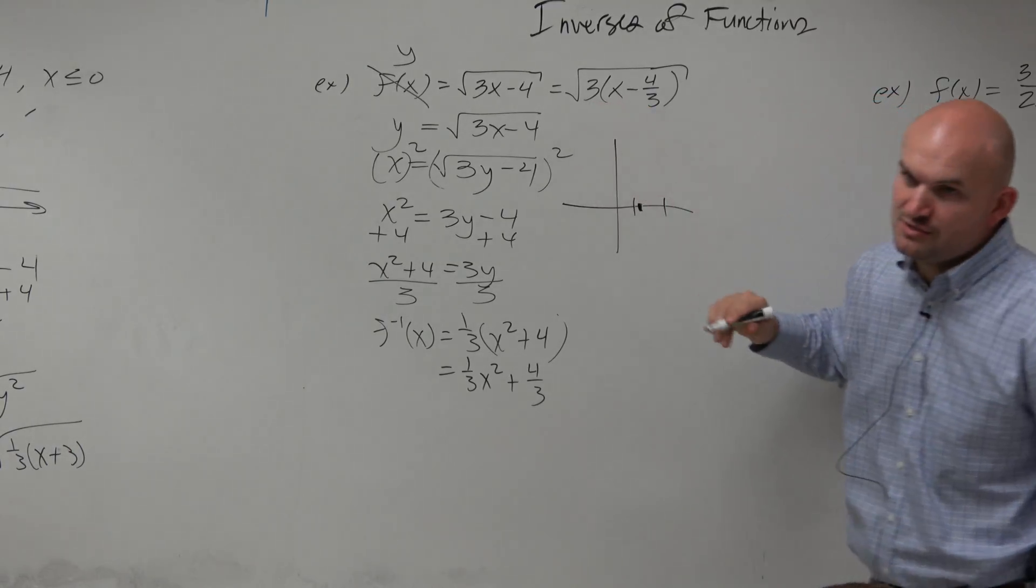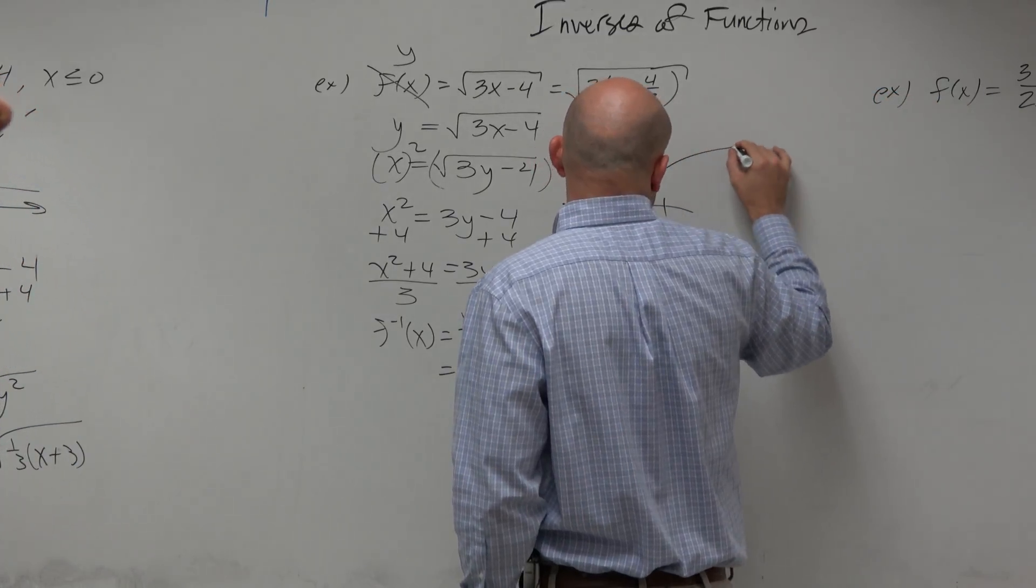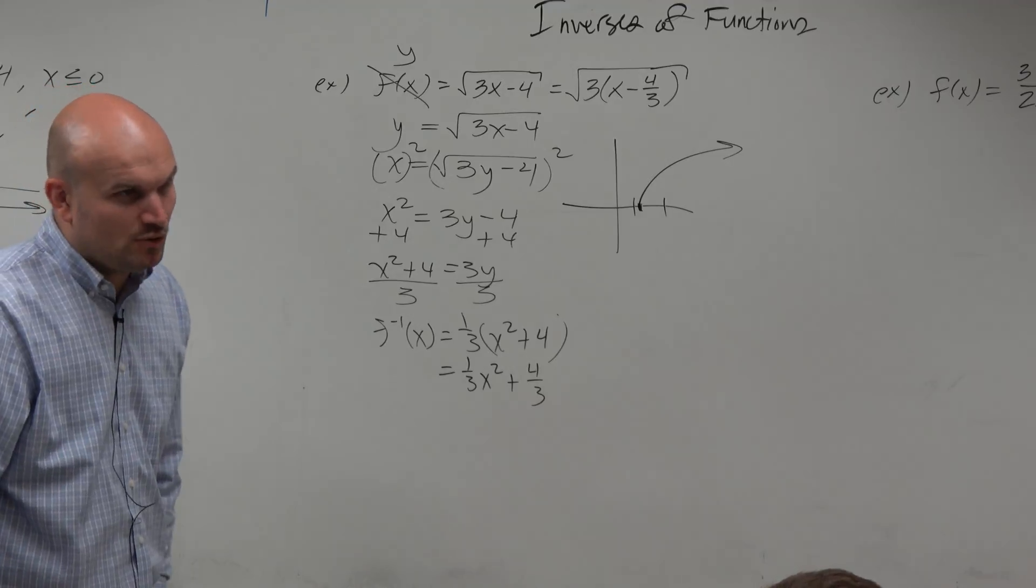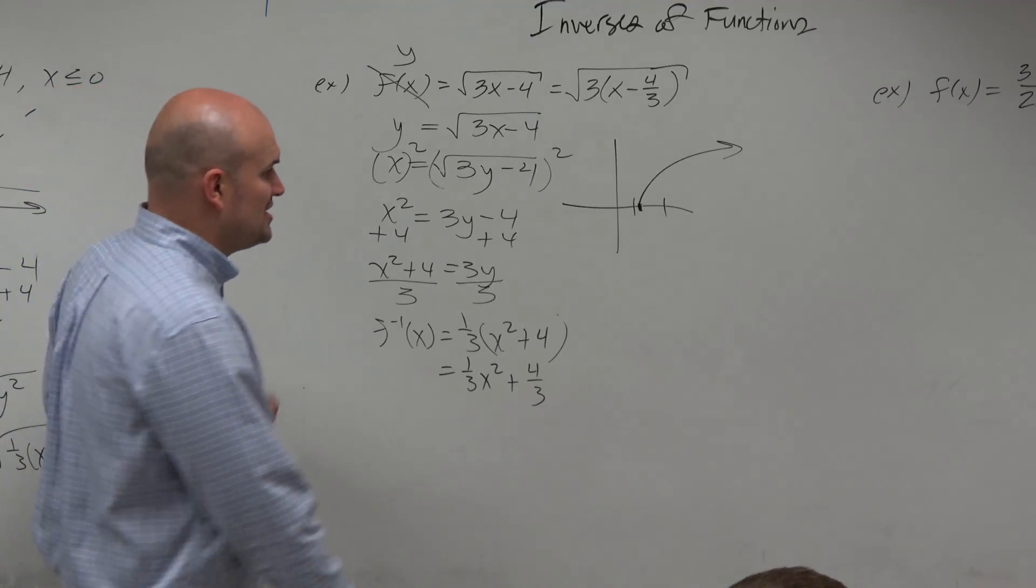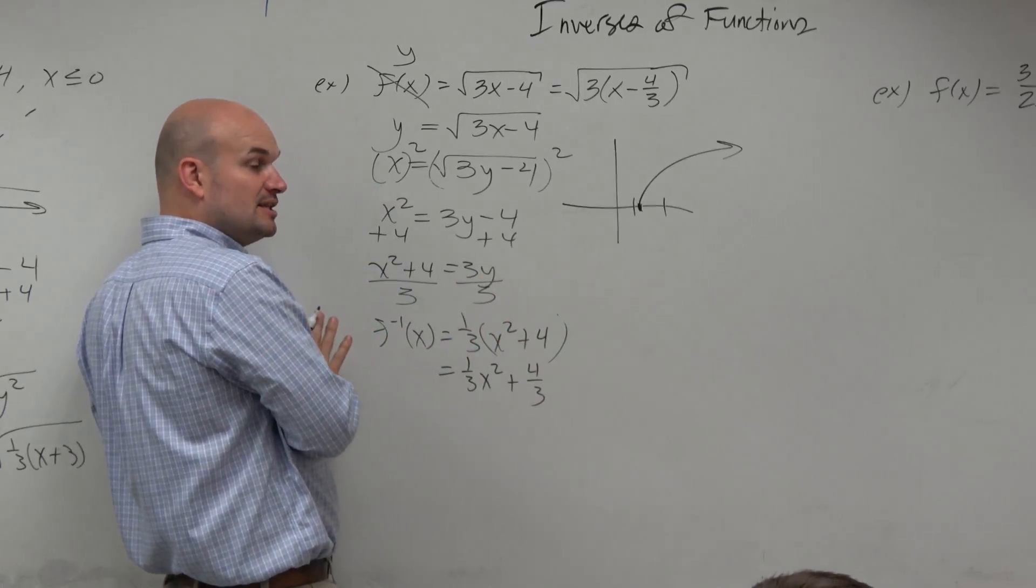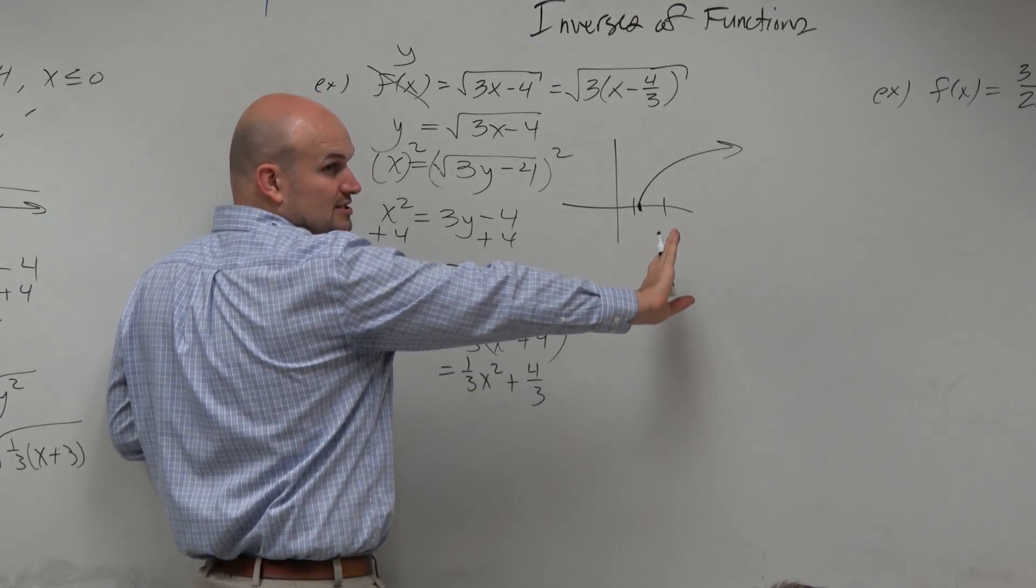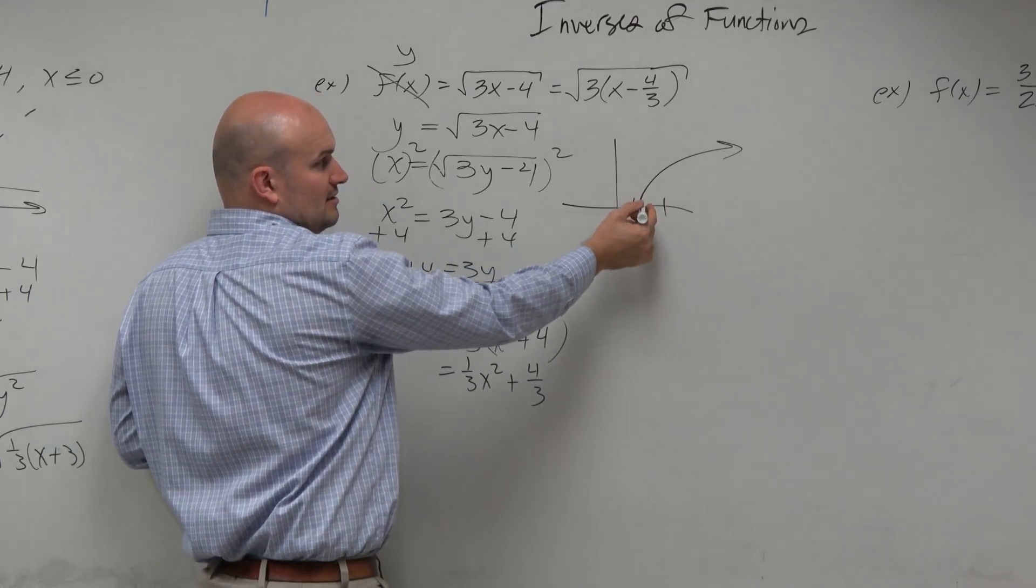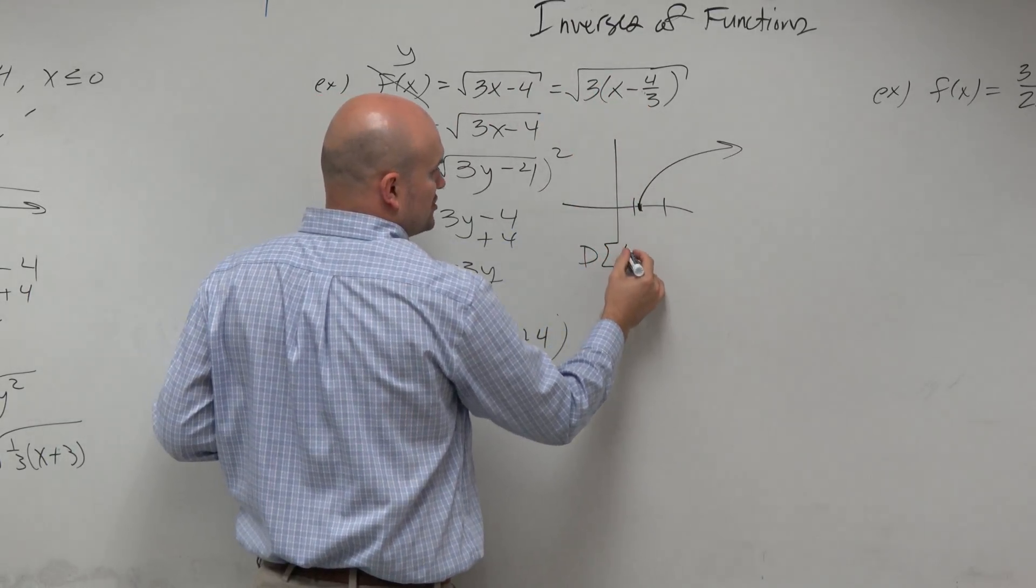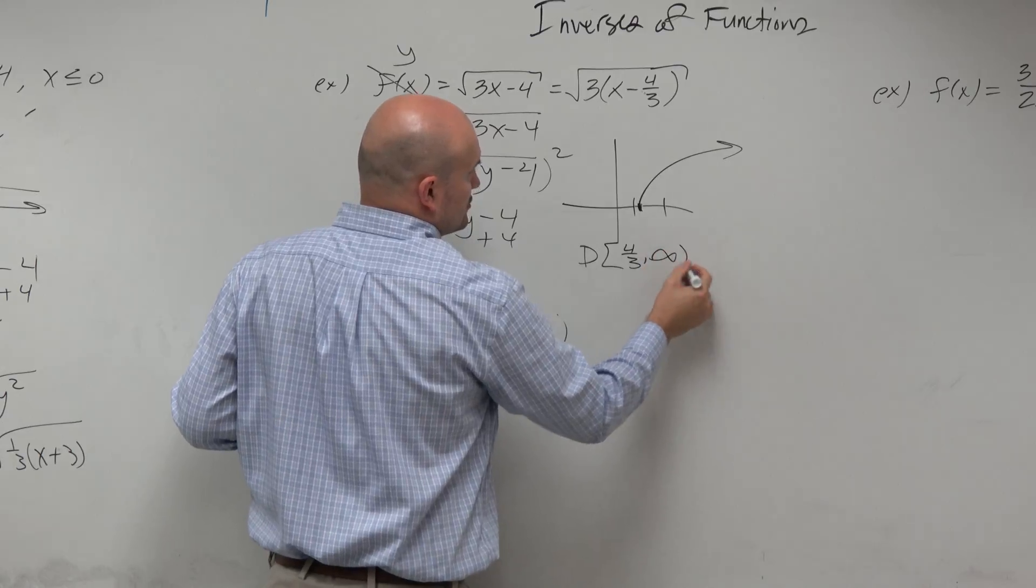And then you also have a horizontal compression of 3. So whatever, the graph looks something like this. Regardless of how good you remember what you were already taught in transformations of functions, can we determine what the domain is? The domain is basically all numbers greater than 4 thirds. Right? That's a transformation of 4 thirds to the right. Domain is going to be 4 thirds to the right.